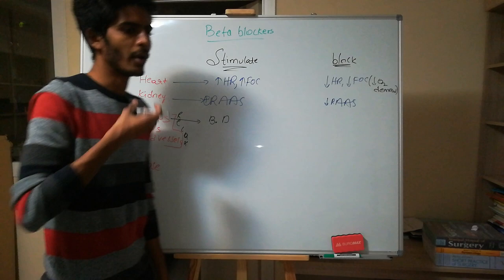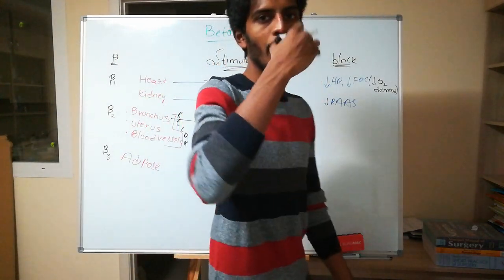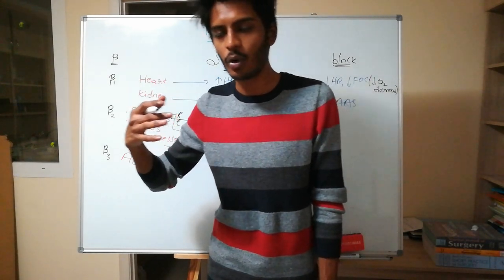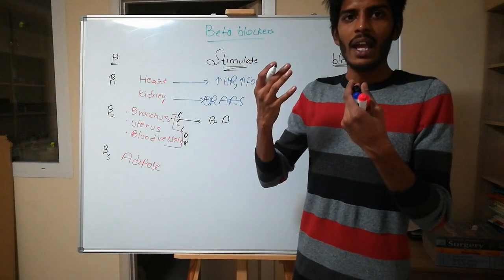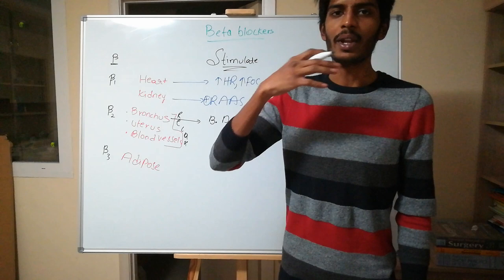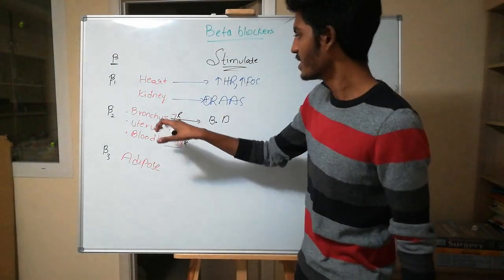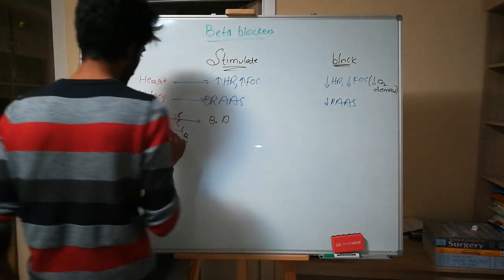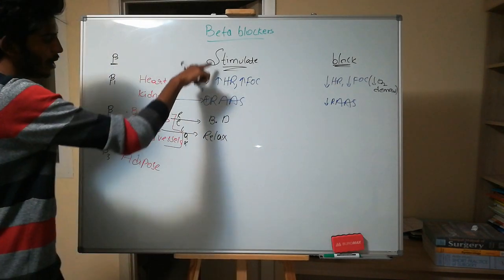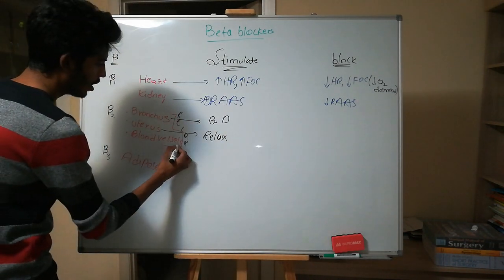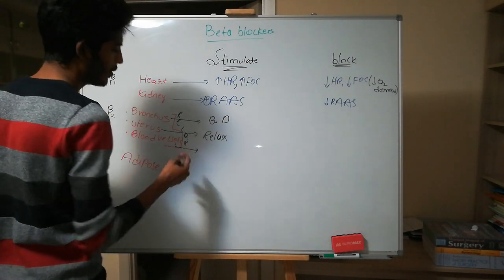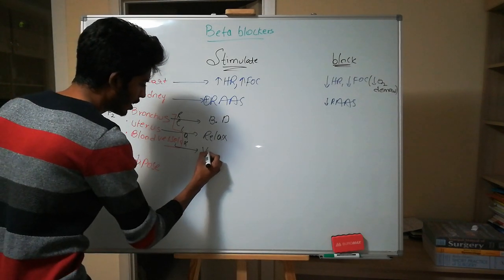With bronchodilation, the bronchus dilates and you can take in more air. When sympathetic activity is high, oxygen demand increases, so the bronchus dilates. For the uterus, stimulation will also cause relaxation. For blood vessels, since both are relaxing, the blood vessel will also dilate — causing vasodilation.